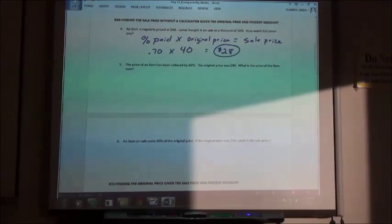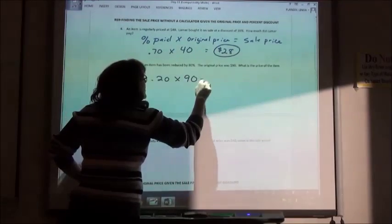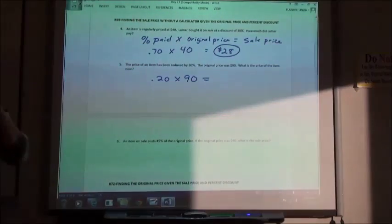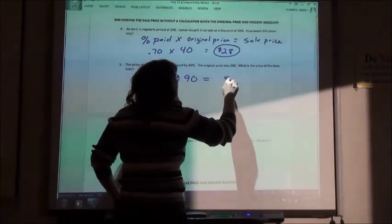The price of an item has been reduced by 80%. If I reduced it by 80%, I only paid what percent? 20%. So I paid 20% of the original price of $90. 20% of $90 is $18. You got a pretty good deal if you only had to pay $18 on a $90 item.